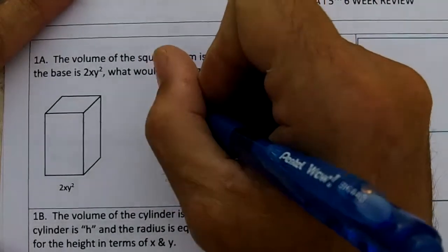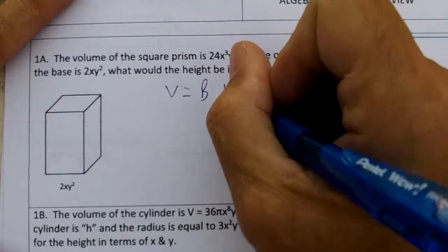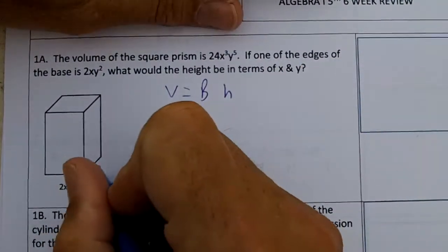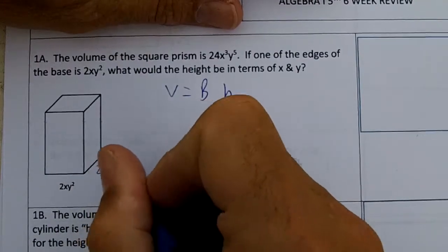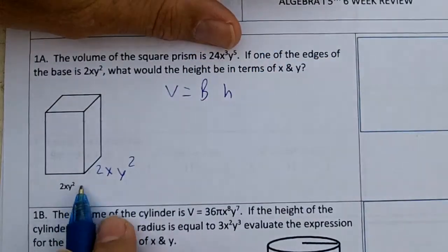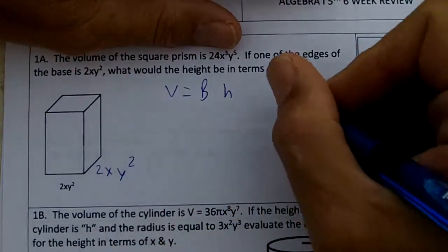We need to know that volume equals the area of the base times the height. Since we have a square, we're going to do 2xy² times 2xy². The base would be 2xy² times 2xy². So let's find B.